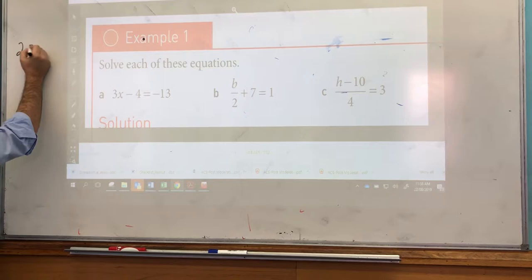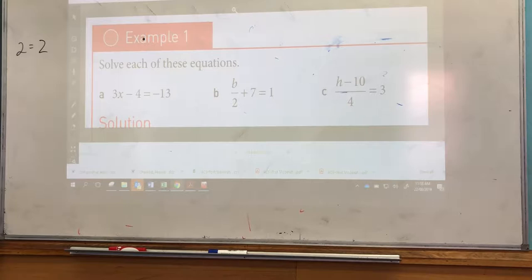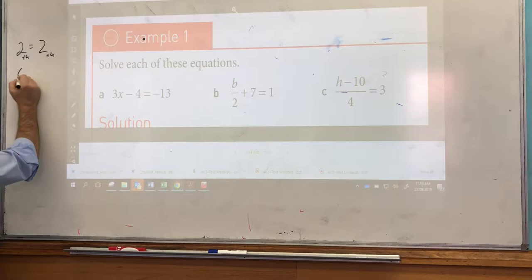If you start with something like 2 equals 2, which is just so blindingly obvious that you don't even need to point it out, and then if we want to do something to both sides. Someone pick an operation: plus, minus, divide or multiply. Plus. Plus. What are we going to add to both sides? Four. Plus four. So if we added four to both sides, we're going to get six equals six.